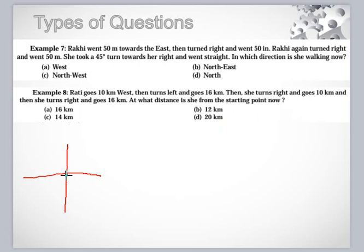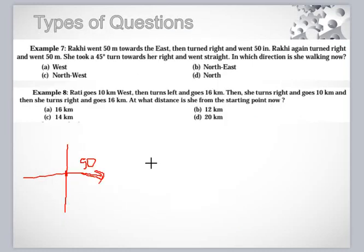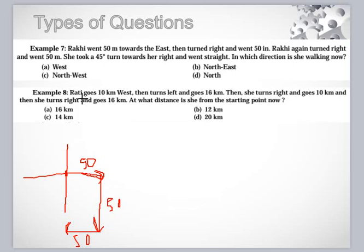Raki went 50 meters toward east. This is Raki — assume this is 50 meters. Then she turned right and went 50 meters. Then she turned right and went again 50 meters. She turned right and went 50 meters.